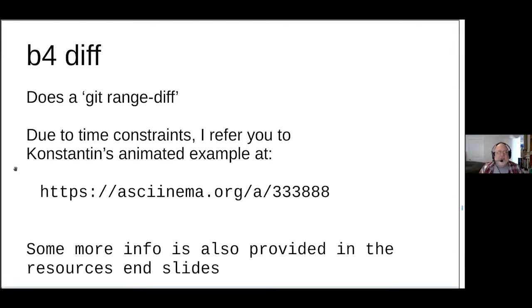There's another command `b4 diff`, which implements a `git range-diff`. I don't have time to discuss it in detail, so I suggest going to Constantine's animated example at the URL provided — it's just a few minutes long and a really good demonstration of how it works. There's also more information about this command in the resource slides at the end.